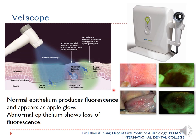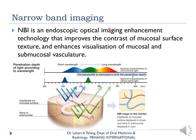VELscope uses a blue light shone on tissue — normal epithelium produces fluorescence and appears apple green, while abnormal epithelium shows loss of fluorescence and appears very dark. The dark central area is where biopsy is required, while surrounding normal tissue appears apple green. It is useful as an adjunct but oral examination remains the gold standard.